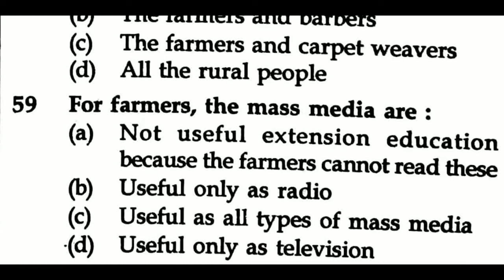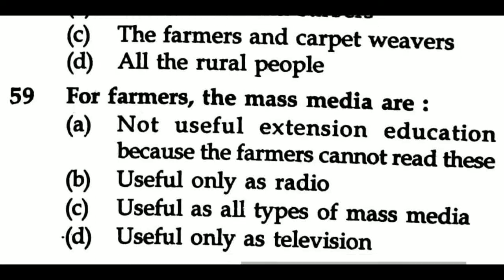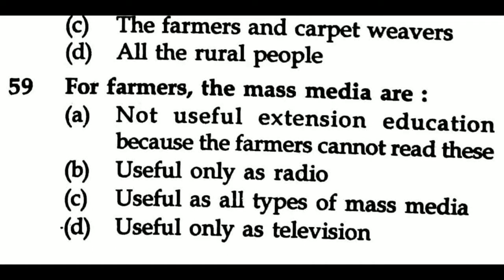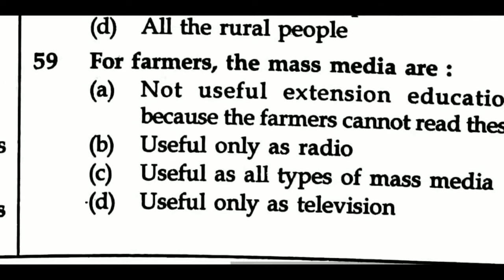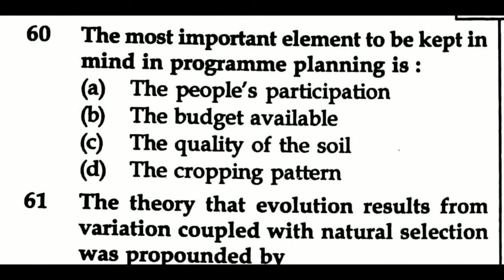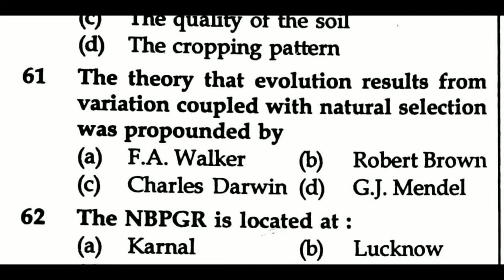Question 59: For farmers, the mass media are — Option A: not useful for extension education because the farmers cannot read, Option B: useful only as radio, Option C: useful as all types of mass media, Option D: useful only as television. Question 60: The most important element to be kept in mind in program planning is — Option A: the people's participation, Option B: the budget available, Option C: the quality of the soil, Option D: the cropping pattern.